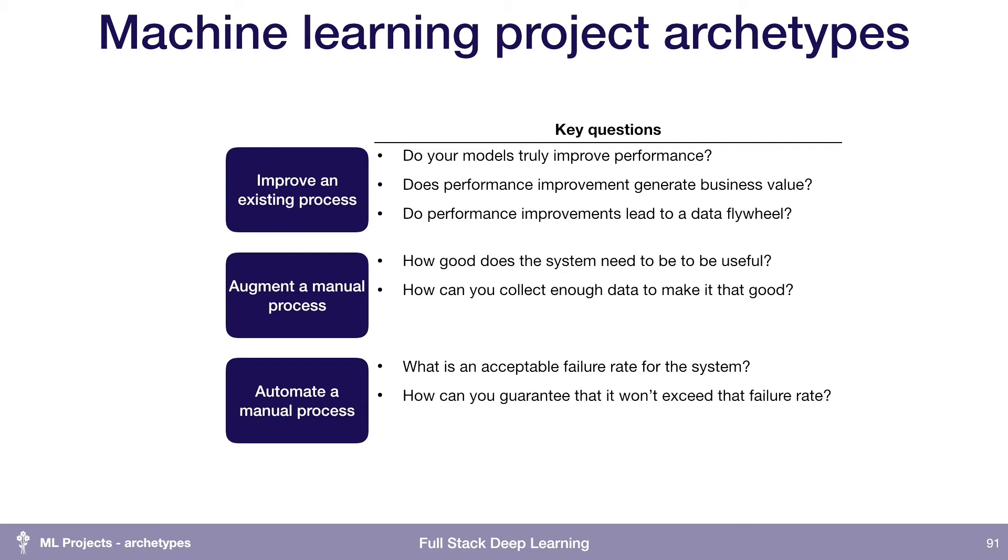For automating a manual process, what's an acceptable failure rate for the system, and how can you guarantee that it won't exceed that failure rate? This is one of the really hard questions with full automation ML projects. If we have a self-driving car with a training set and validation set and we achieve 99.999% accuracy on the validation set, how do we know that really corresponds to the failure rate we care about in the real world? How do we guarantee our dataset is comprehensive of everything we'll see in production?